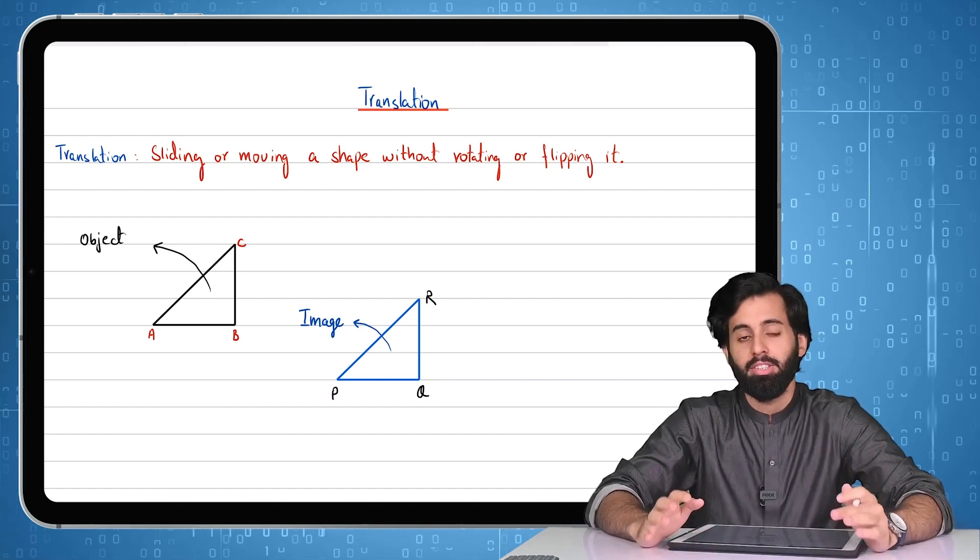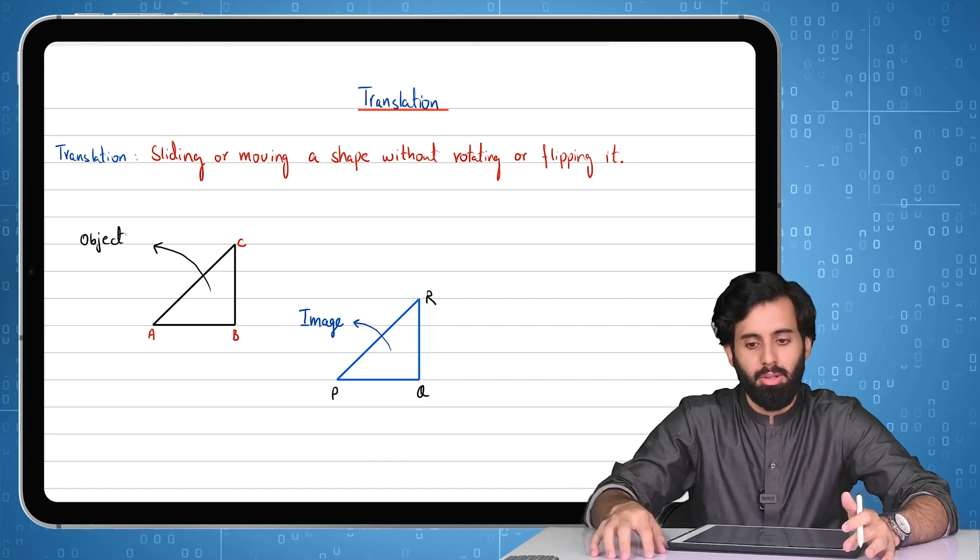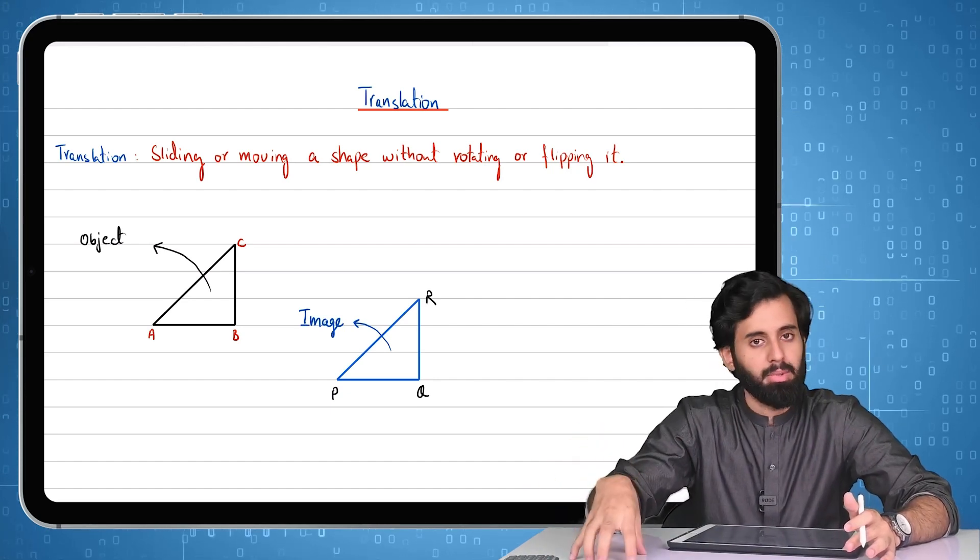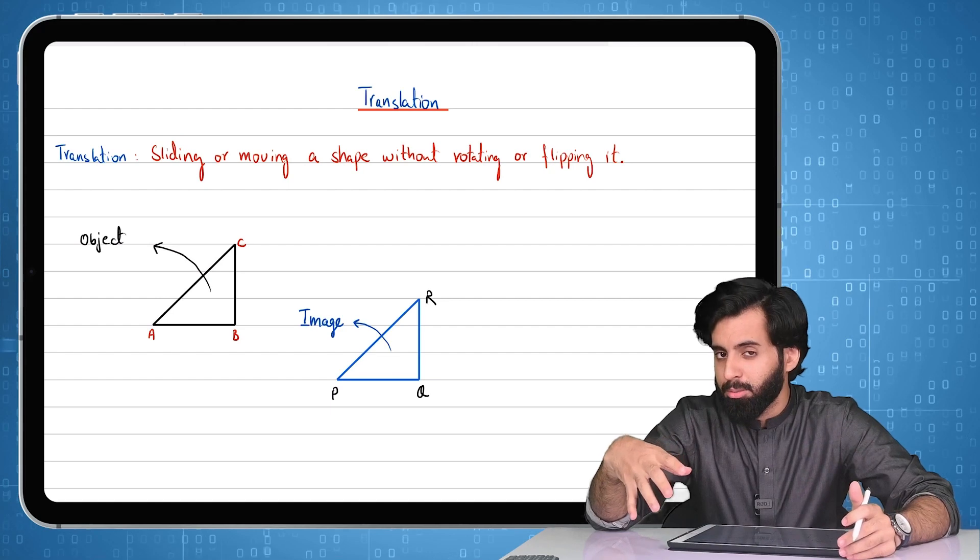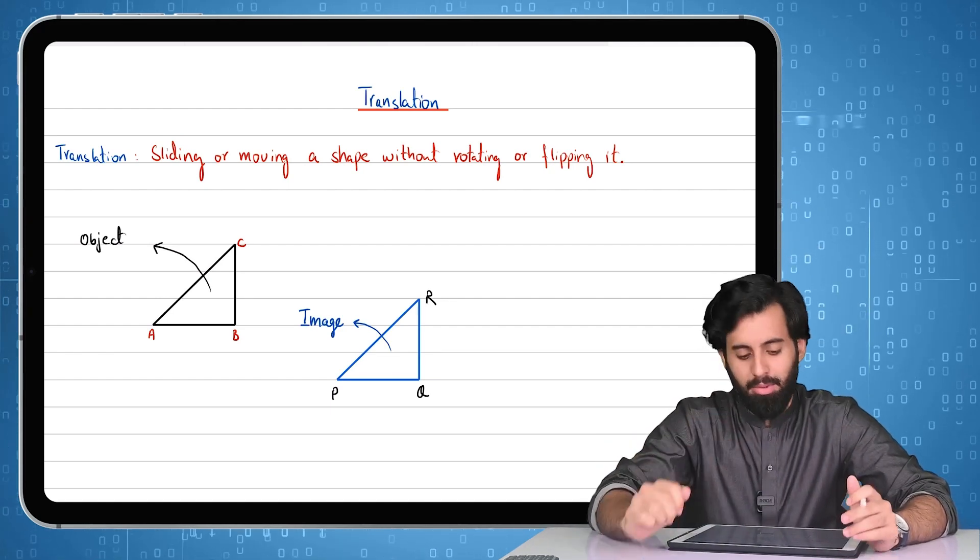That means in translation, the only thing that changes is the position of the object. So if it's here, it's going to move to someplace else. And where exactly is it going to move? Who decides that? We'll come to that in a minute.